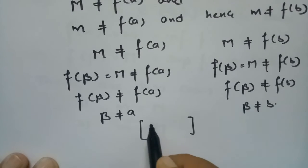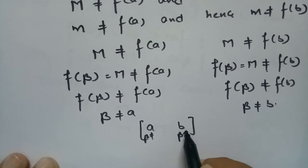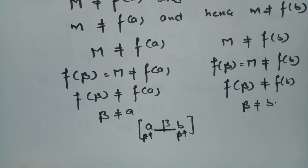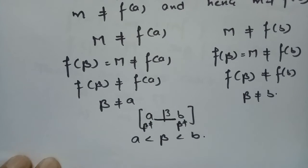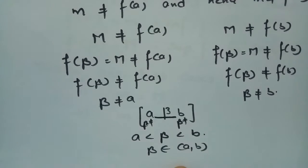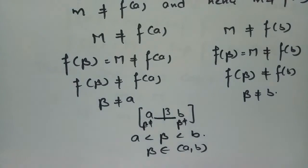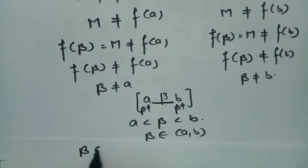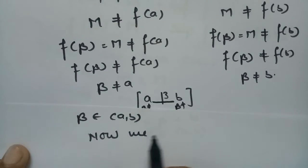Since β is not equal to a and not equal to b, β lies strictly between a and b. So a < β < b, meaning β belongs to open (a,b). We have found a point β in open (a,b). Now, according to the theorem, we need to show that f'(β) = 0.